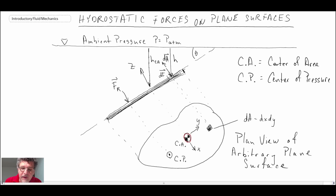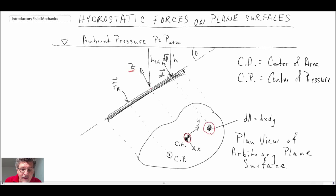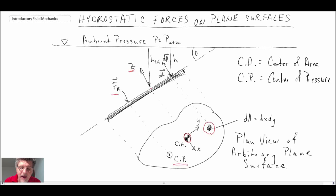CA will denote the center of area. We've said that the center of area is acting at a depth H_CA below the surface. The Z coordinate goes perpendicular to the plate as shown here on this part of the diagram, and then the X and Y coordinates are there. We look at a differential element on the plate and will be deriving the equations from that. The hydrostatic pressure averaged over the entire plate acts at a location we refer to as the center of pressure, CP, denoted by the vector F_R.